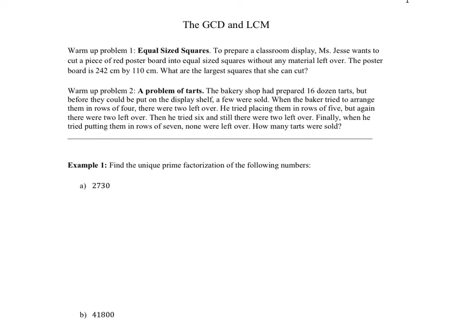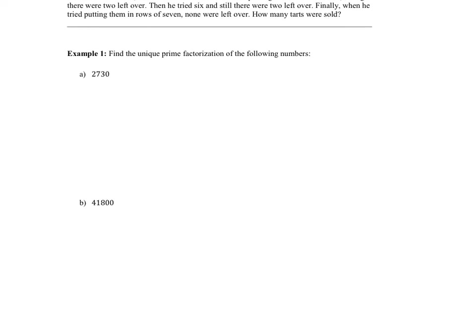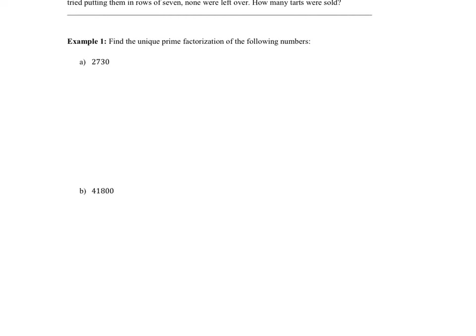The first step for this video is to recall unique prime factorization. We're going to find the unique prime factors of the following numbers. The idea is to factor as much as possible. For this first number, because there's a zero, I'm going to factor out a 10. So 273 multiplied by 10.